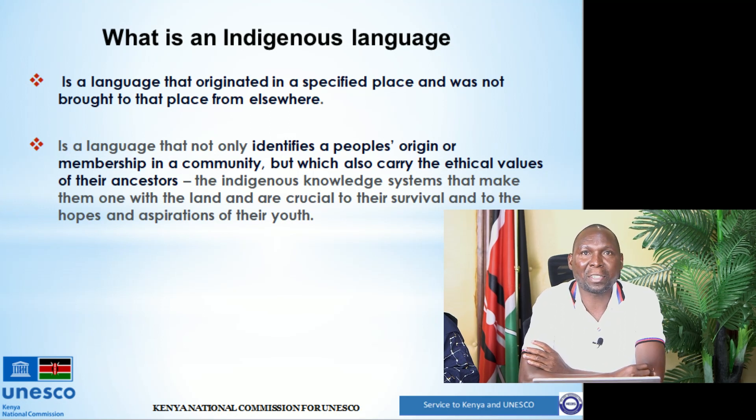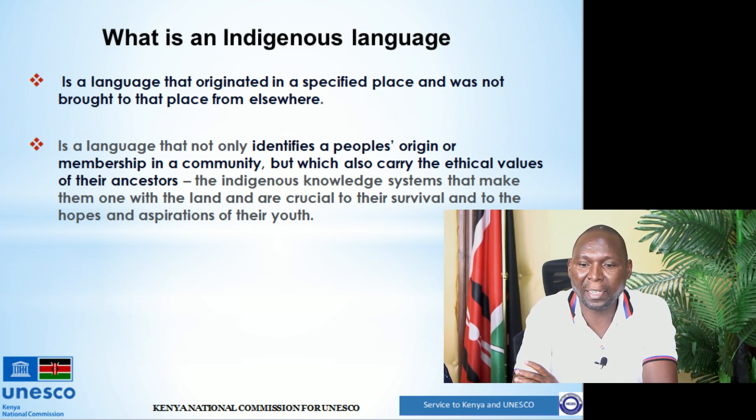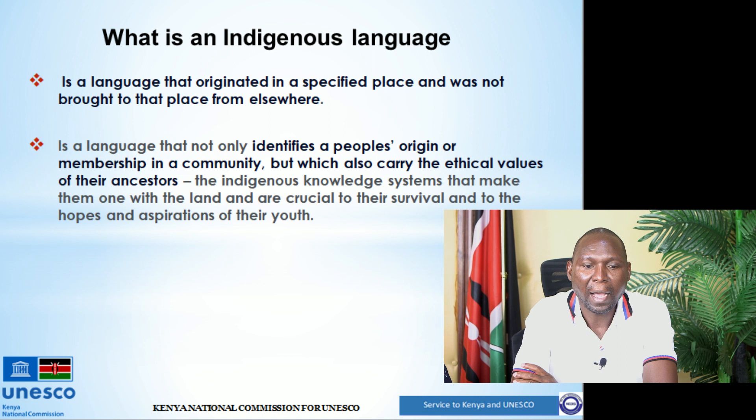What is an endangered language? An endangered language is a language that originated in a specific place and was not brought there from anywhere. It is a language that springs up from a given community and is spoken there — it has not been exported to other areas, nor was it imported. It came from that specific place and is spoken there.